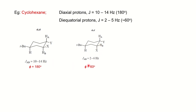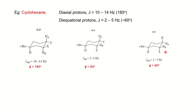By decreasing the angle from 180° to 60°, since 60° falls in the 0° to 90° range, the J value decreases — that is why it is 2 to 6 Hz compared to the maximum at 180°. If both protons are equatorial — the equatorial-equatorial conformation — they also have approximately a 60° dihedral angle, and using the equation you will get a coupling constant in the same lower range.